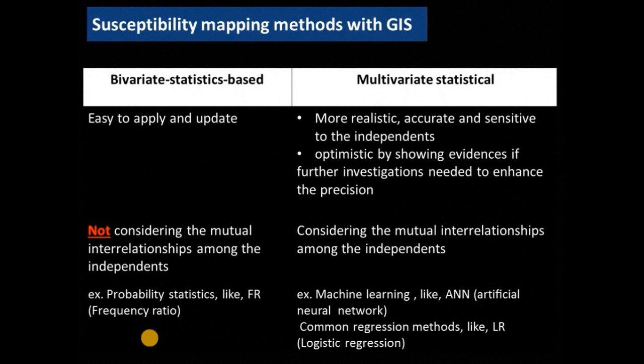In general, in susceptibility mapping, most of the scientists or scholars focus on mainly two types or approaches: bivariate statistics-based approach or multivariate statistical-based approach. The bivariate statistical-based approach is one of the simplest and easiest approaches — easy to apply and update — but it suffers from some drawbacks related to not considering the mutual interrelationships among the independent factors. We will talk more about this.